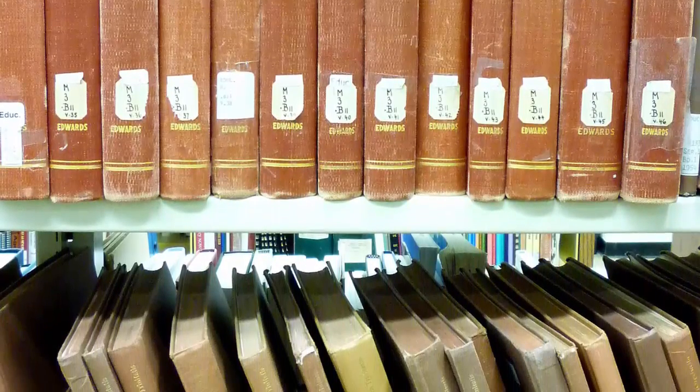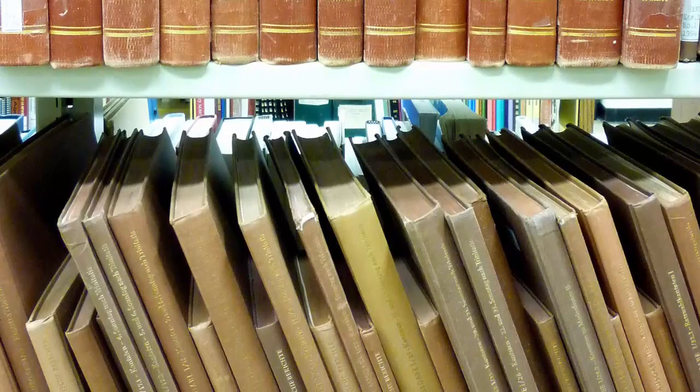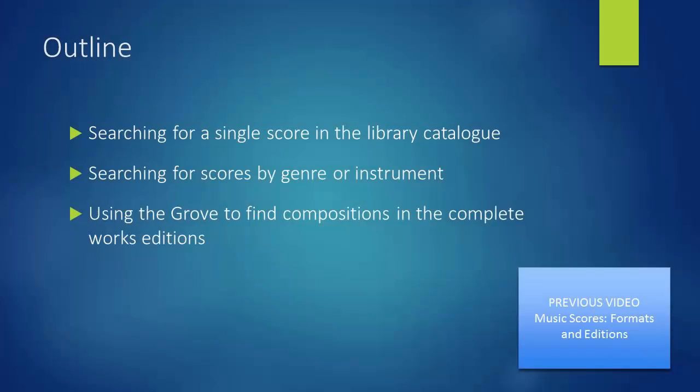That concludes this video on finding scores in the library. In this video, we've covered how to search for a single score using the library catalog, how to search for scores by genre or instrument, and how to use the Grove Dictionary of Music to find compositions in the complete works editions.